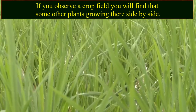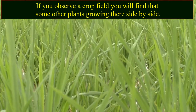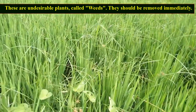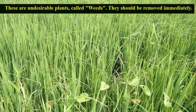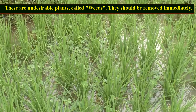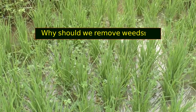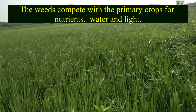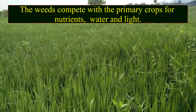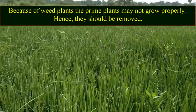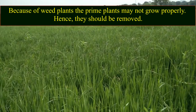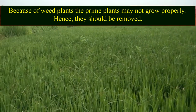If you observe a crop field, you will find some other plants growing there side by side. These are undesirable plants called weeds and should be removed immediately. Why should we remove weeds? Weeds compete with the primary crops for nutrients, water, and light — because of weed plants, the prime plants may not grow properly.